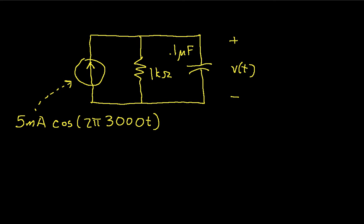So the first thing to do in AC steady-state analysis is to identify the frequency that we'll be working at, and that's given by the frequency in the cosine of the source. We have here that our frequency omega is 2π times 3000. That is, our current source is creating an AC current with a frequency of 3000.